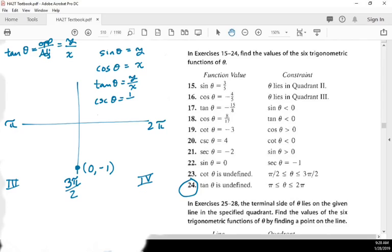Cosecant is one over y, and then secant equals one over x, and then cotangent is x over y. All right, so if you know all of this stuff and you know the coordinates, you're done. Just plug this stuff in and you're done.